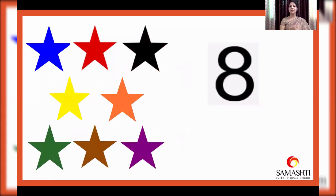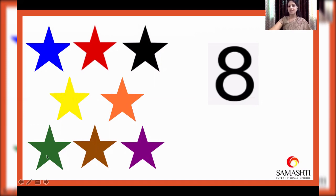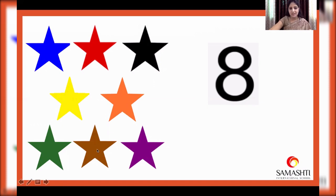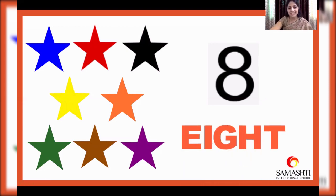Now how many stars can you see here? Let's count. One, two, three, four, five, six, seven, eight. Eight stars. And now we will have a quick look at the colors of these stars. Black, red, blue, orange, yellow, purple, brown and green. Eight stars. Eight. E-I-G-H-T. Eight.